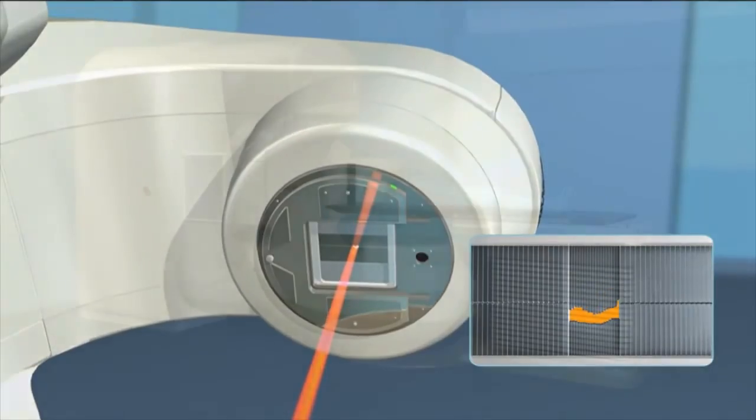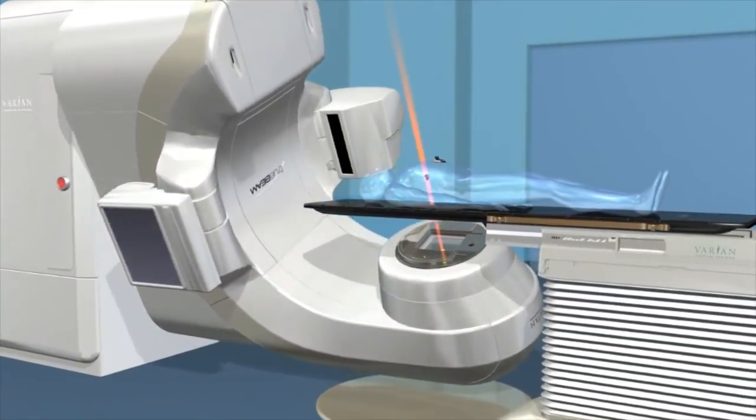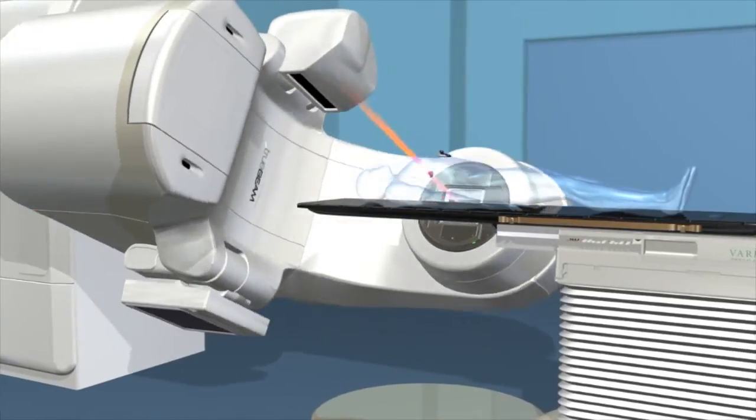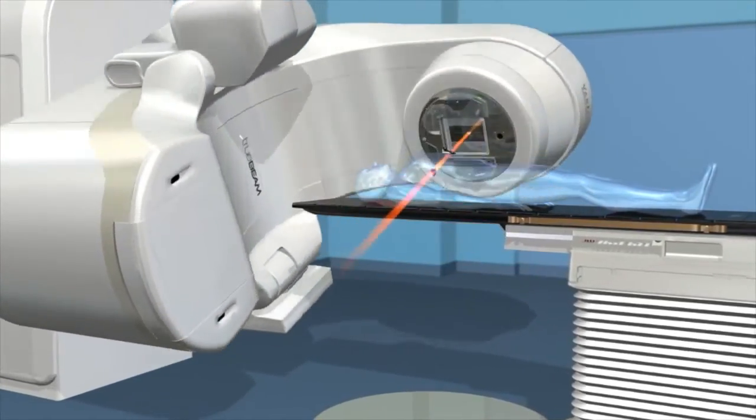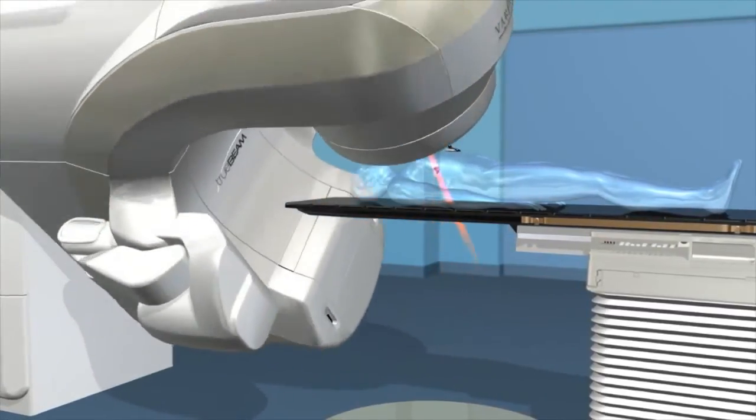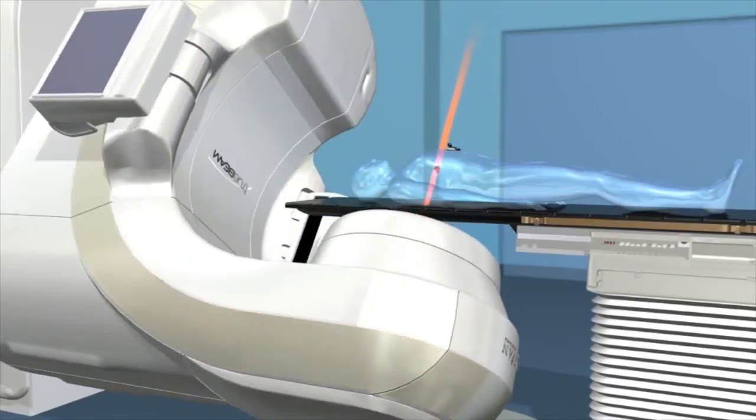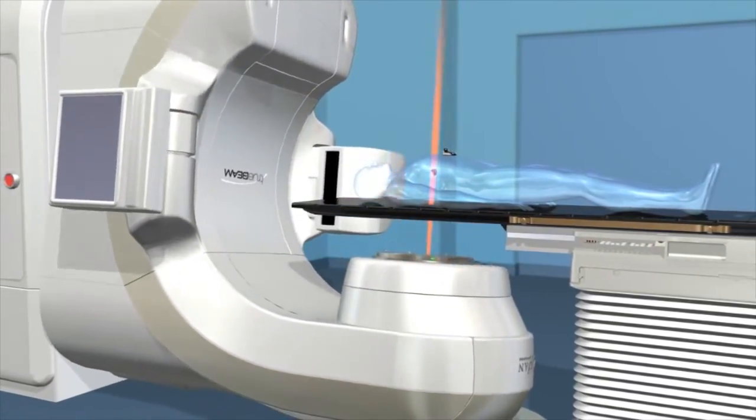During the delivery process, the gantry will revolve around you, delivering the radiation with submillimeter accuracy. The beams are actually invisible and are shown here for visualization purposes only. You may also hear the machine as it rotates. Most people feel nothing from the treatment itself.